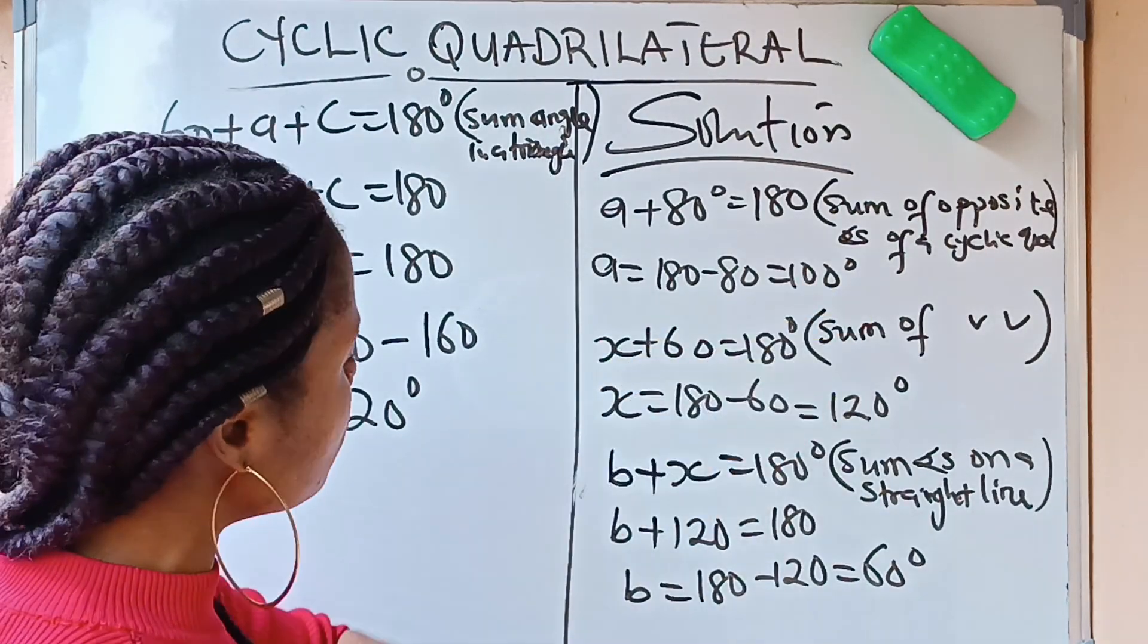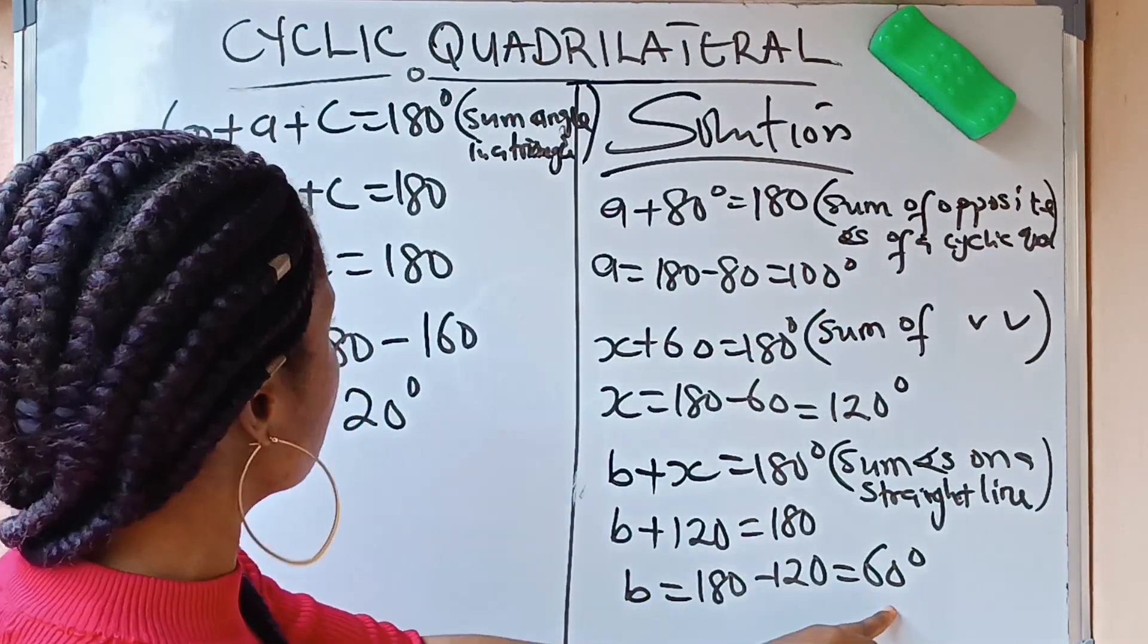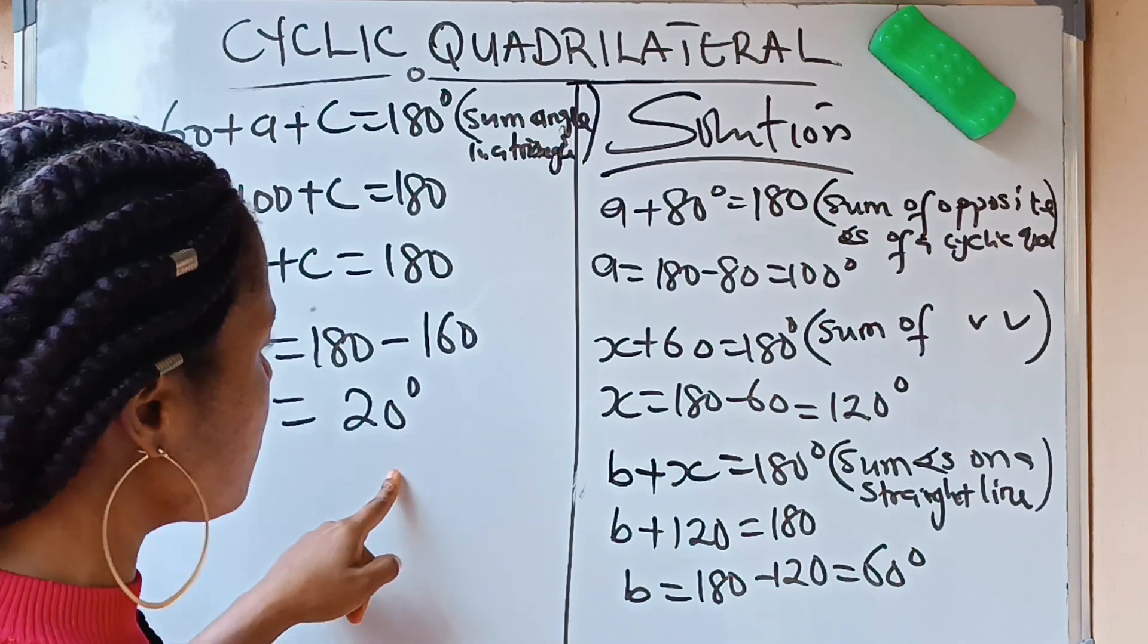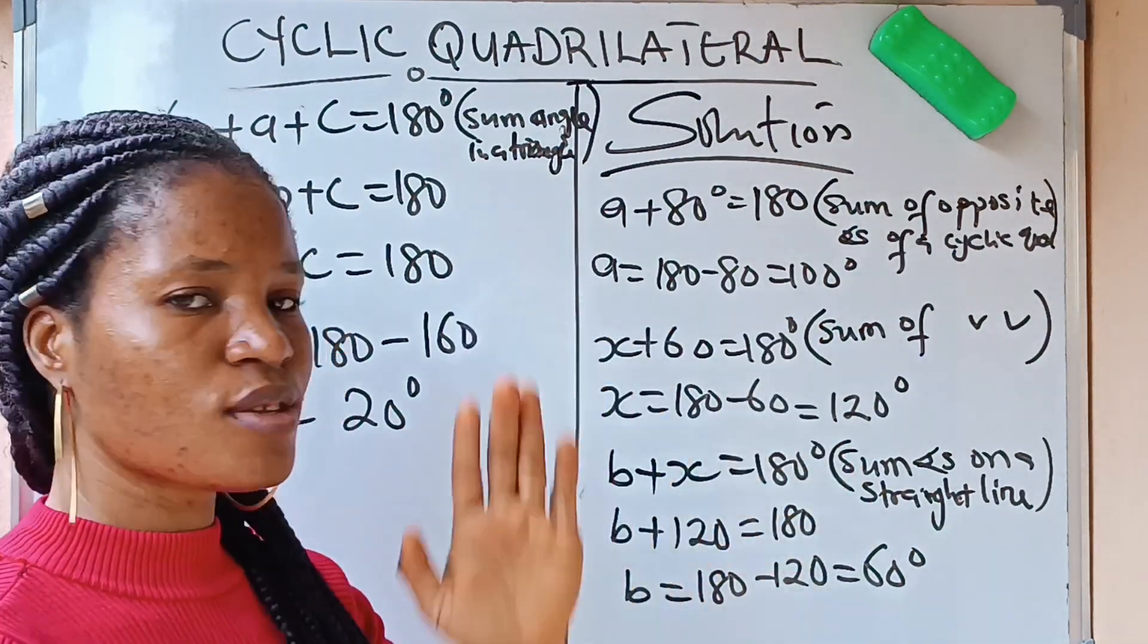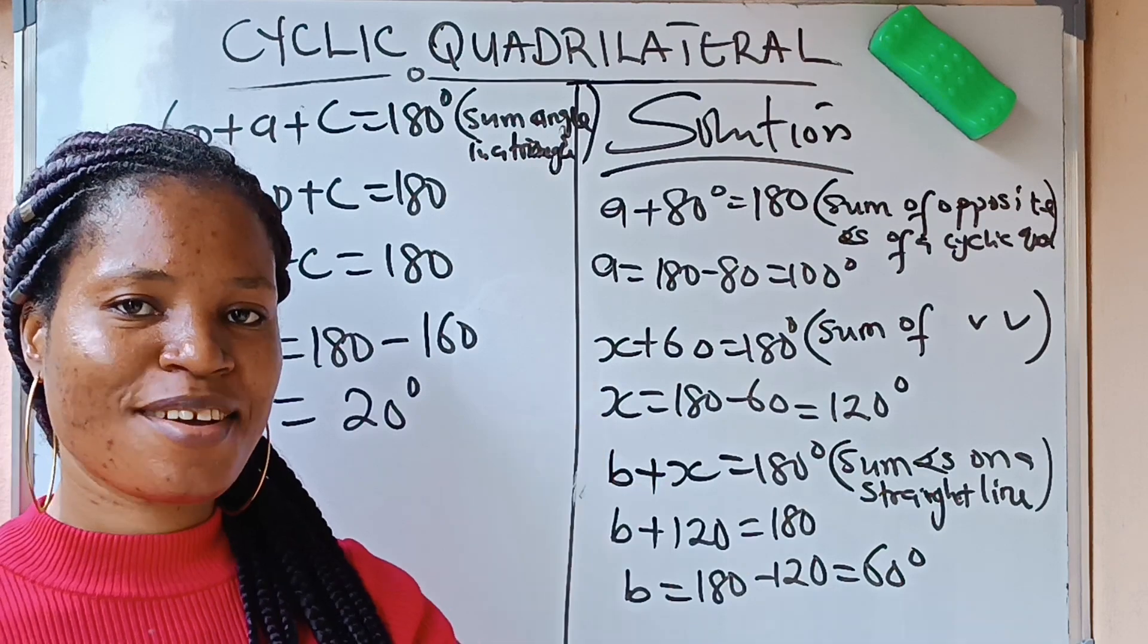So we have gotten our A to be 100, our B to be 60, our C to be 20 degrees, and our X to be 120 degrees. Do have a lovely day and bye!